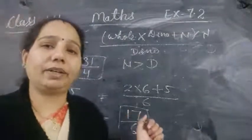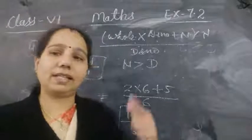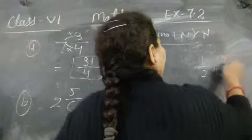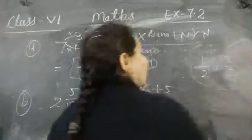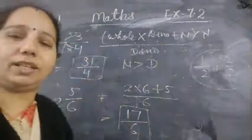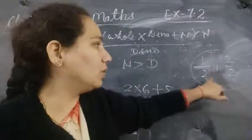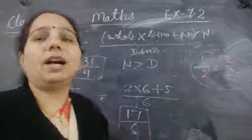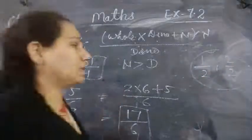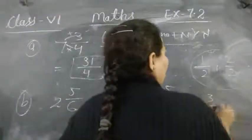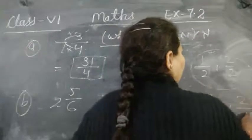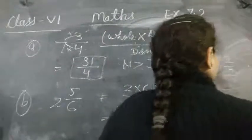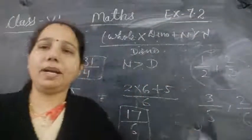Now, like and unlike fractions. Like fraction: fractions whose denominators are the same are called like fractions. Unlike fraction: fractions where the denominators are not the same are called unlike fractions.